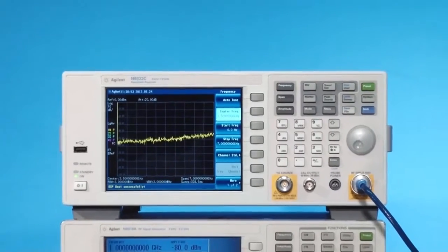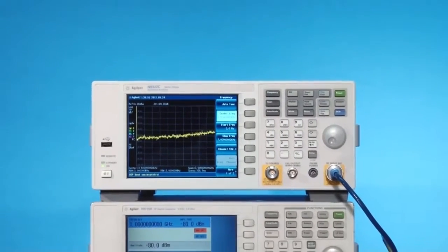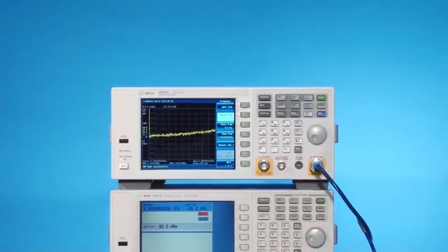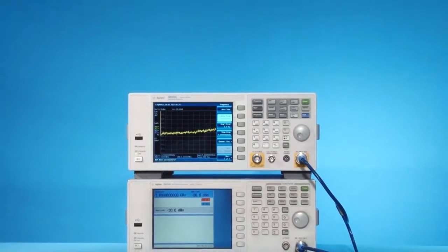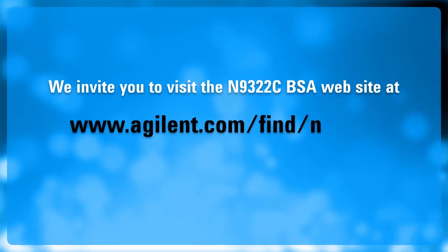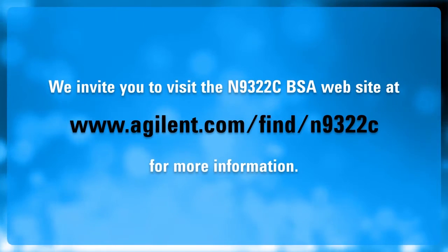The N9322C's higher sensitivity shortcut is just one of several features designed to help you gain higher test efficiency and capture more opportunities. We invite you to visit the N9322C BSA website at www.agilent.com/find/N9322C for more information. Thanks for watching.